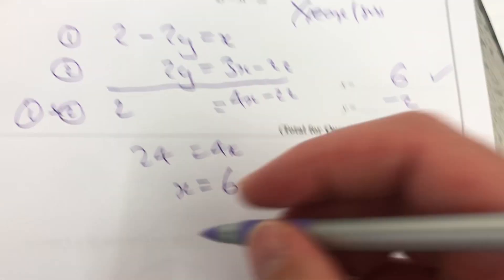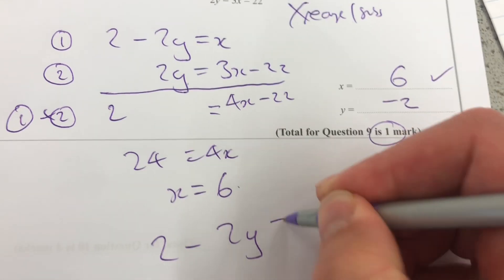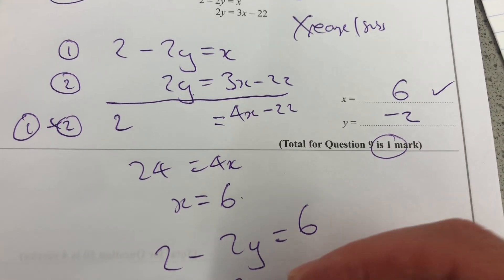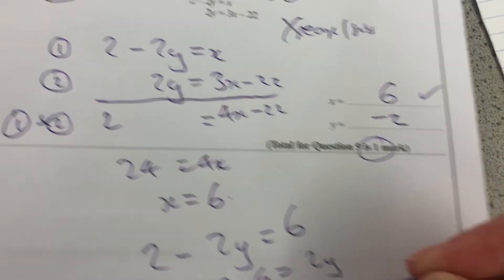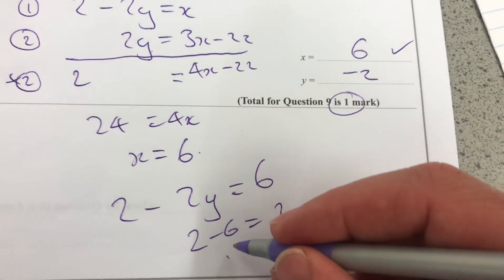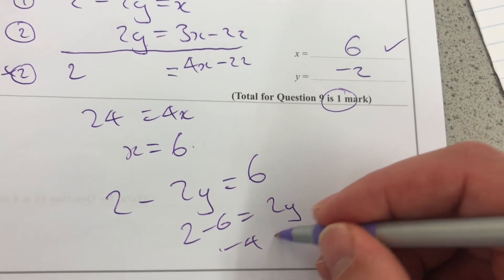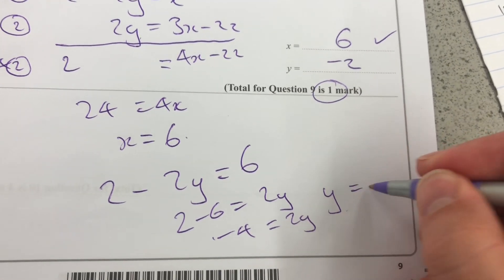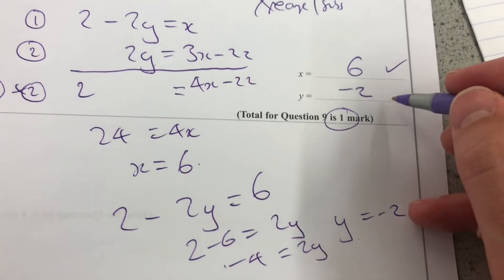Plug that into here. 2 minus 2y equals 6. Bring that to that side. 2 minus 6 equals 2y. So 2 minus 6 is minus 4, and that's 2y. Divide by 2, y is going to equal minus 2, as expected.